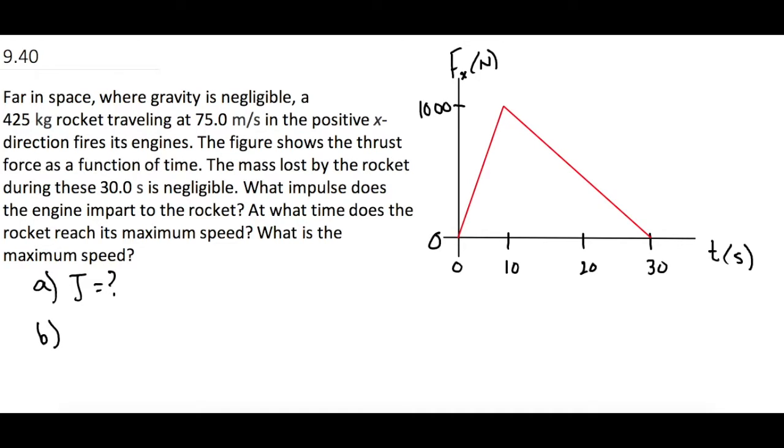For part B, at what time does the rocket reach its maximum speed? We're looking for a time. And for part C, what is the maximum speed? We're looking for the final velocity of the rocket.